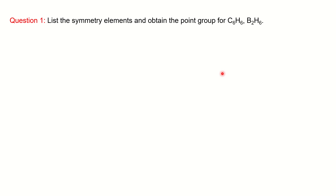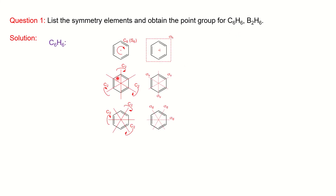Now we will look at some problems, not basic molecules like water and ammonia, but more complex ones since your exams are very close. We will start with benzene. Benzene has six carbons and is a symmetrical planar molecule. The first step is to find the principal axis. With six atoms, rotating each atom six times brings the first atom back to its original position, so the principal axis is C6.